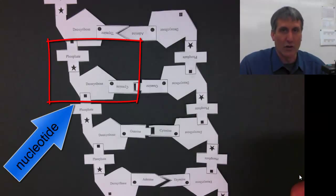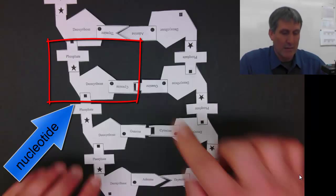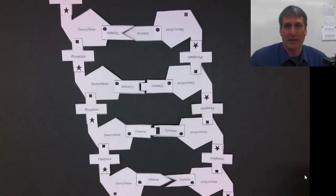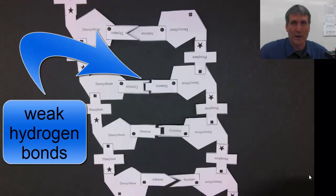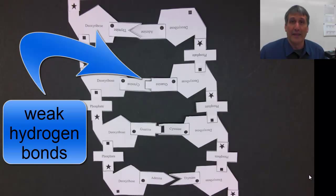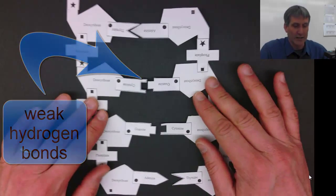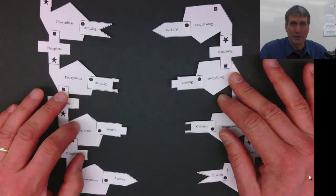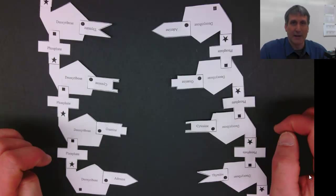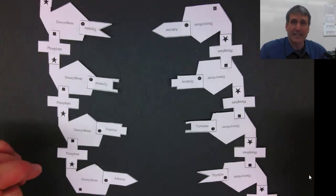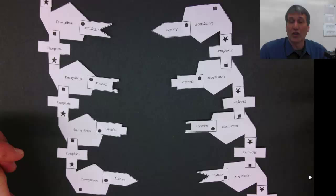The nucleotides are covalently bonded together, but the bases in the middle are not covalently bonded. They are held together with weak hydrogen bonds. And this is important because it allows the molecule to unzip, exposing the bases in the middle.